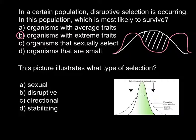Here is the second question: this picture illustrates what type of selection? You see the picture — this is the old population and this is the new population. Answer A: sexual. Answer B: disruptive. Answer C: directional. Answer D: stabilizing.